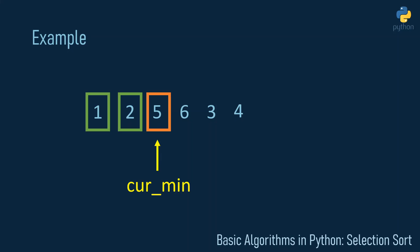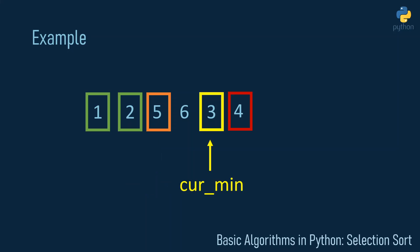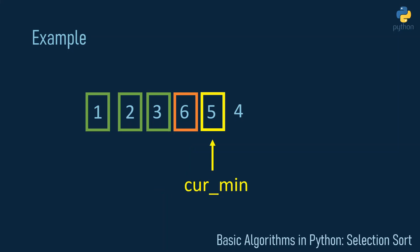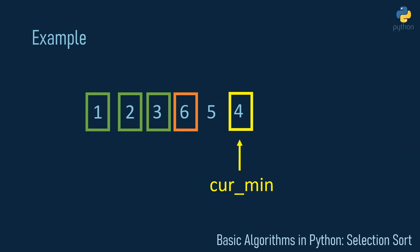In the next iteration we start with the five, mark it as the current minimum. Six is greater — do nothing. Three is less than five, so it becomes the new current minimum. Four is greater than three — nothing happens. We swap the three and the five to bring three into the right position. Then we go on with the six, mark it as the current minimum. Five is less than six, and four is less than five, so four becomes the minimum. We swap four and six, leaving four in the right place.